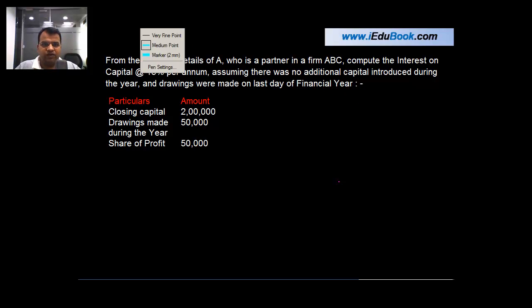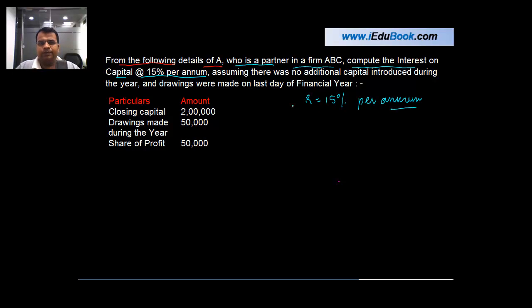Let us read this question first. From the following details of A who is a partner in a firm ABC compute the interest on capital at the rate of 15% per annum, so your rate is equal to 15% per annum assuming there was no additional capital introduced during the year and the drawings were made on the last day of the financial year.